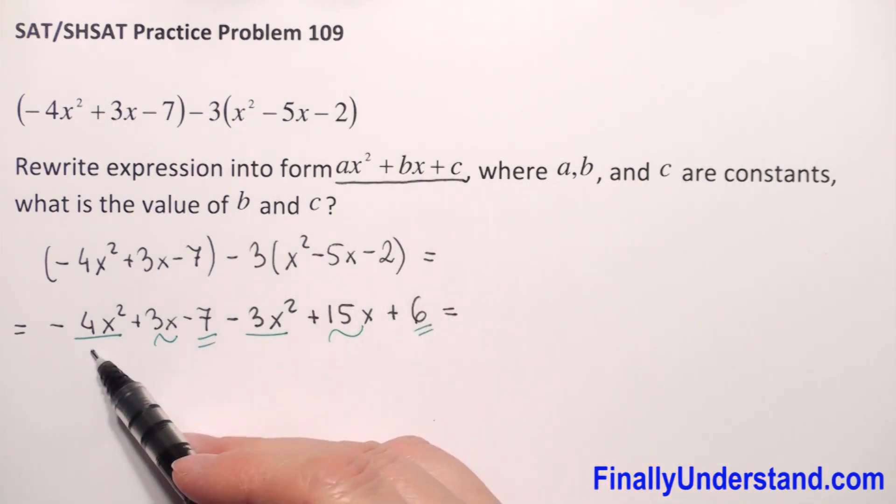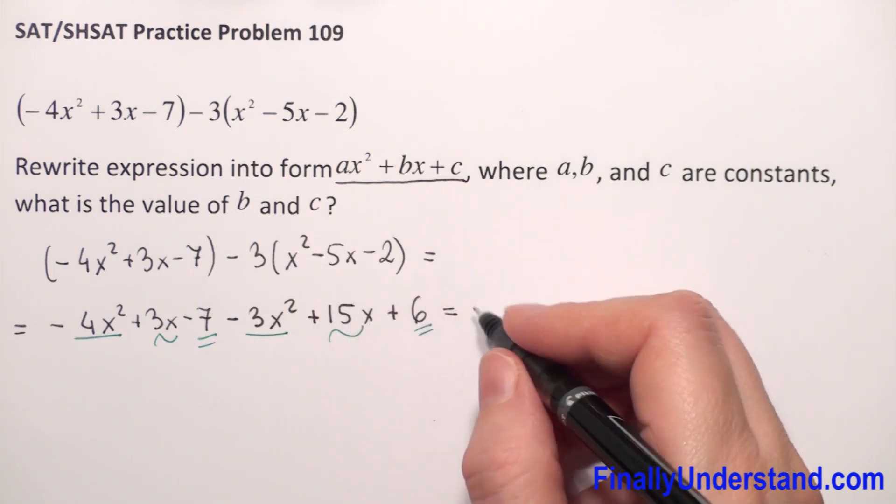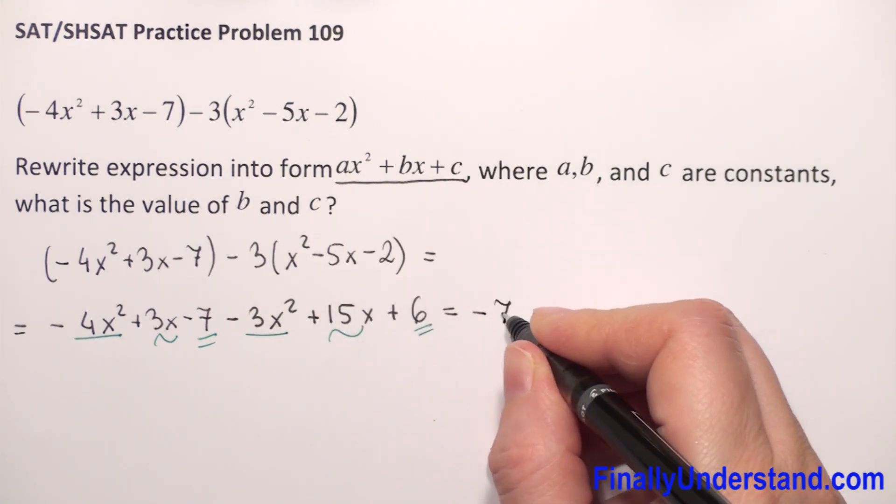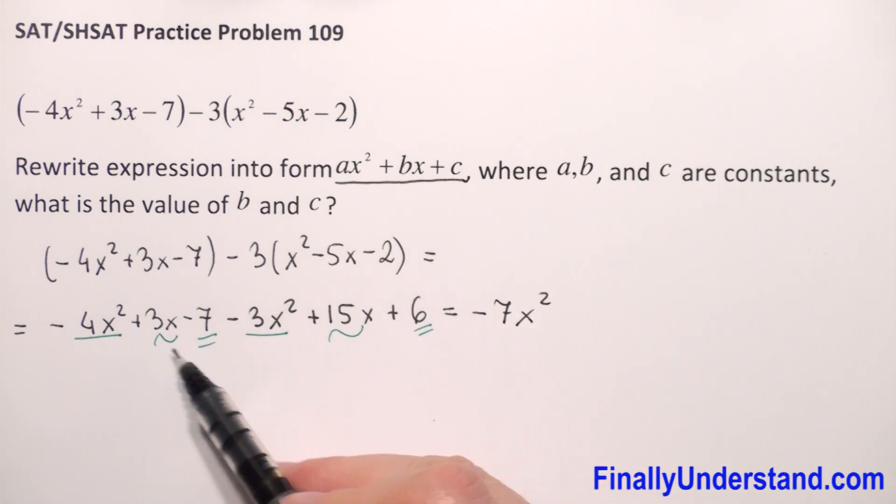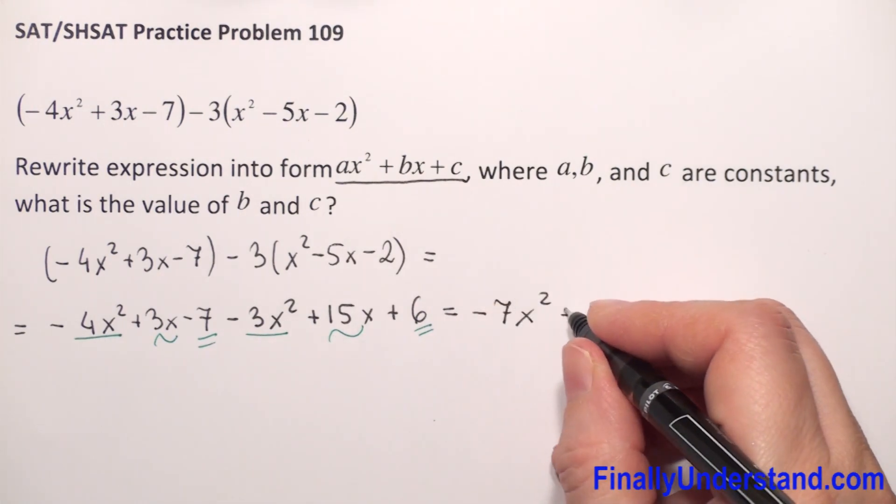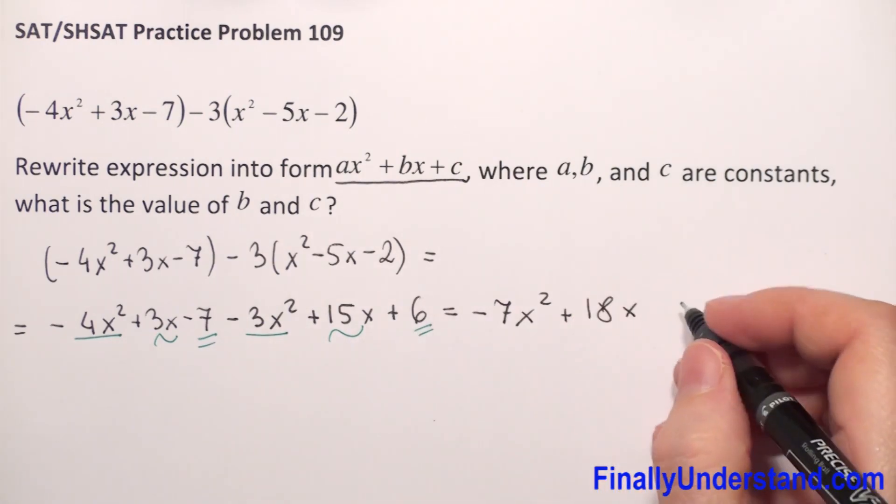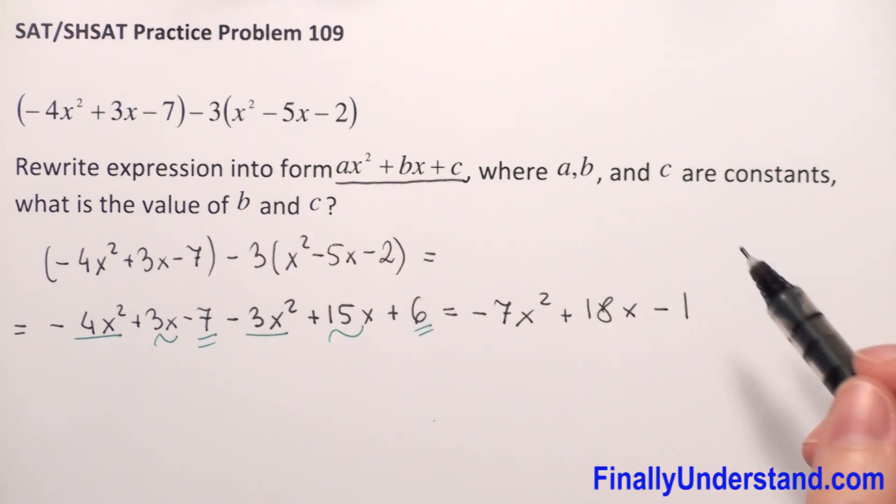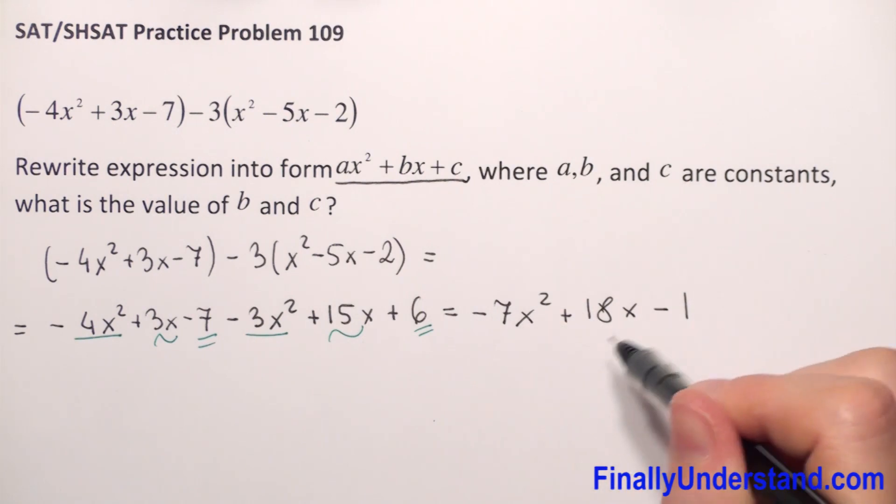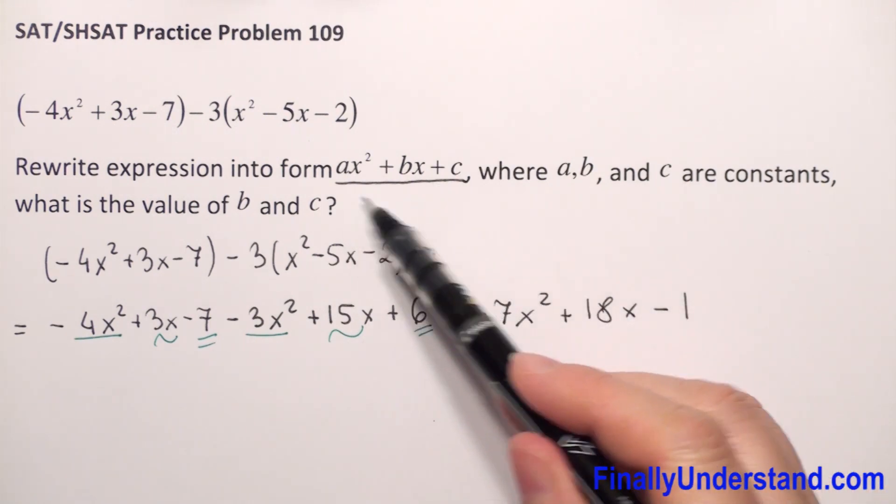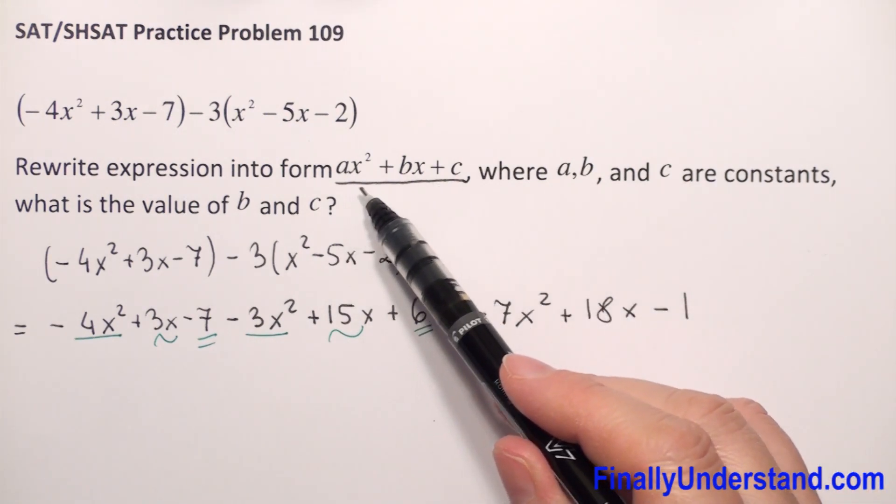So negative 4x and negative 3x, so this is negative 7x squared. Next we have 3x and 15x, so this is 18x. And negative 7 plus 6, so this is negative 1.